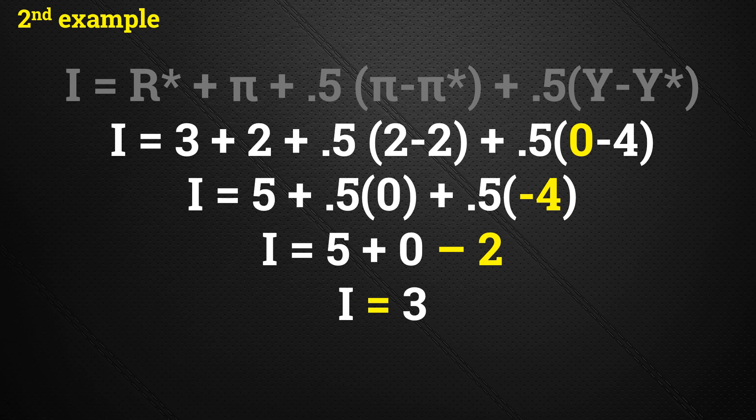The Taylor rule equation spits out a target nominal interest rate of 3% in this case. The nominal interest rate would have to decrease by 2 percentage points compared to the current market setting of real interest rate 3 plus inflation 2 equals 5. So the Fed, with the Taylor rule in place, would be required to lower interest rates until achieving an interest rate of 3%.